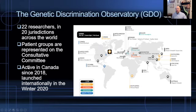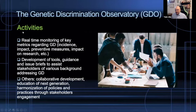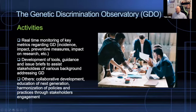The observatory has been active since 2018, and at the international level we launched in winter 2020 with a publication in Nature Genetics. In terms of activities, we're doing real-time monitoring of key metrics on genetic discrimination — documenting the phenomenon scientifically, looking at incidence, impact, preventative measures, et cetera. Based on that evidence, we develop tools, guidance, and policy briefs to assist stakeholders of various backgrounds to address genetic discrimination.